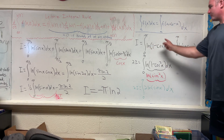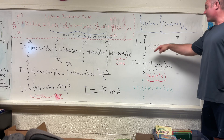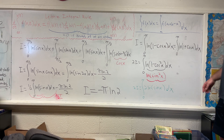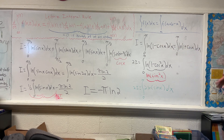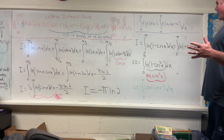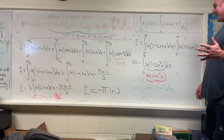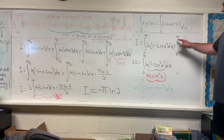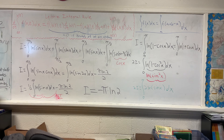So the first step is to apply King's property. If I is equal to the integral from zero to pi of the natural log of (1 - cos x) dx, then it's also equal to the integral from zero to pi of the natural log of (1 - cos(pi - x)). Using the trig identity, cosine of (pi - x) is negative cosine x, so this becomes the integral from zero to pi of the natural log of (1 + cos x) dx.